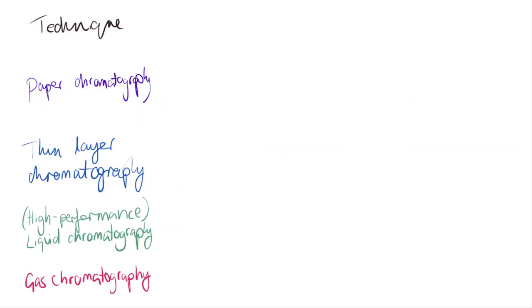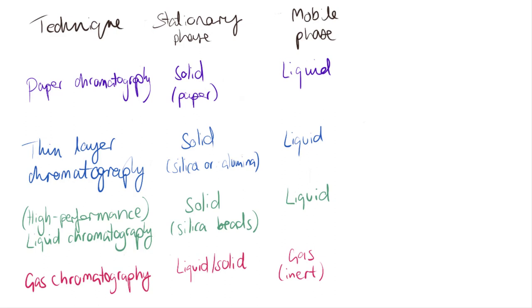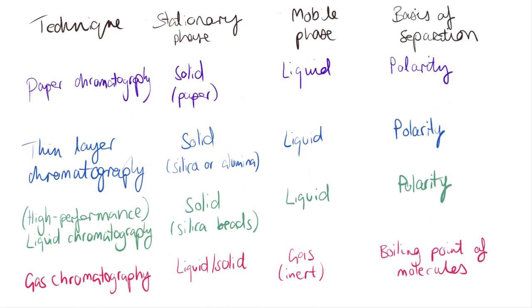Now we've looked at four different kinds of chromatography. We can summarize their properties in a table by comparing their mobile and stationary phases, as well as the method of separation that they are based on.